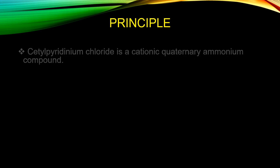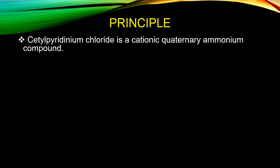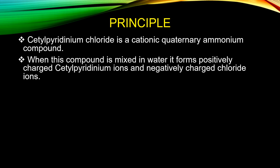Now let's see the principle. Cetylpyridinium chloride is a cationic quaternary ammonium compound and is antiseptic in nature — it is present in most toothpastes and hand washes. We use 0.35% cetylpyridinium chloride solution, which is prepared by mixing 0.35 grams of cetylpyridinium chloride in 100 ml of distilled water. When this compound is mixed in water, it forms positively charged cetylpyridinium ions and negatively charged chloride ions.